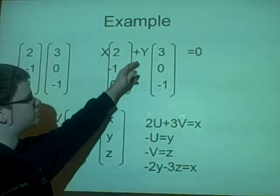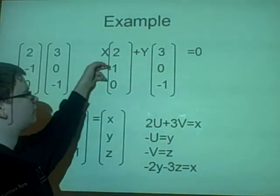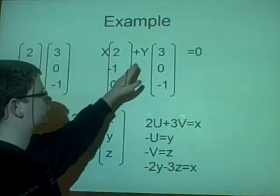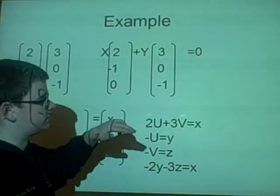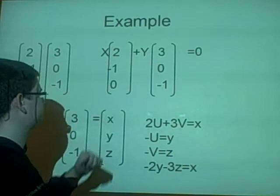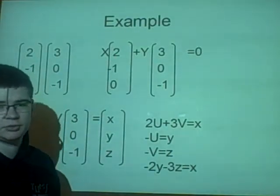We have 2x plus 3y equals 0, -x plus 0y equals 0, and -y equals 0. Obviously, x and y are both 0, so it is linearly independent.